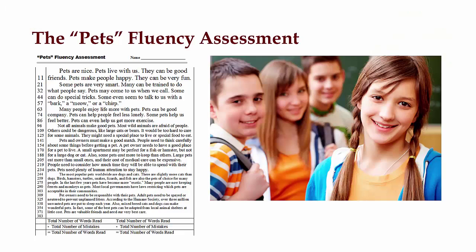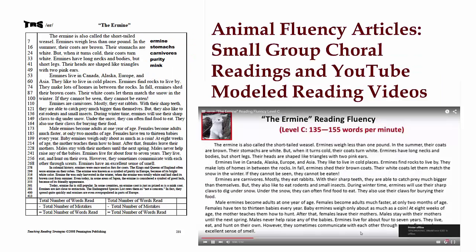Increased fluency rate and accuracy are highly correlated with increased reading comprehension. With a solid foundation in the alphabetic code, key sight words, and syllable rules, students can increase their fluency levels by practicing repeated choral readings along with modeled readings at their appropriate challenge levels. The Teaching Reading Strategies program includes two instructional options for fluency practice: small group choral readings and YouTube modeled reading videos. These 15-minute sessions are allotted for fluency practice beginning in week 3 for the half-year intensive program and week 14 for the full-year program.